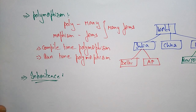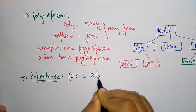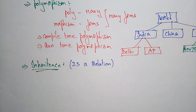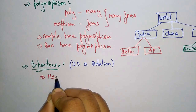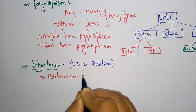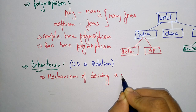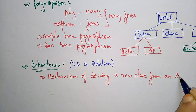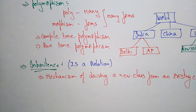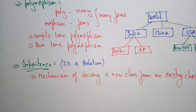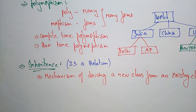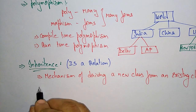Now let us come to another feature, that is inheritance. Inheritance is nothing but it has an IS-A relation. Inheritance is a mechanism of deriving a new class from an existing class. So what is this new class and what is the derived class? Inheritance is of five types.